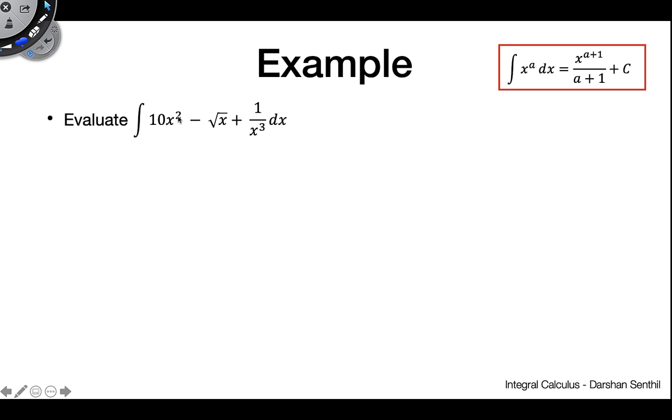So here's our example here. We have the antiderivative of 10x squared minus the square root of x plus 1 over x cubed. Now what might be daunting is that these two terms at the end here don't really look like polynomials. And they're technically maybe a little bit different from the conventional polynomial, but you might remember that we can actually rewrite them as follows. We can rewrite this entire thing as, for example, the square root of x becomes x to the 1 half, and 1 over x cubed becomes x to the minus 3 dx. Now that looks a lot more like something we could apply our formula to. So let's go ahead and do this.